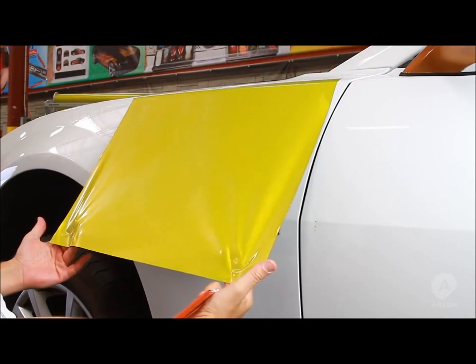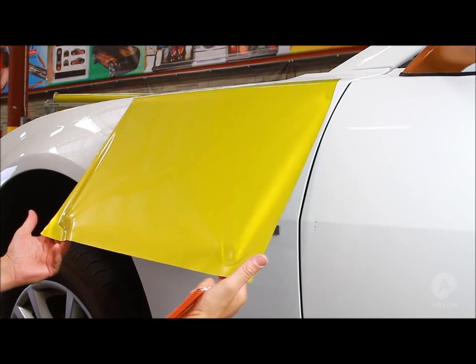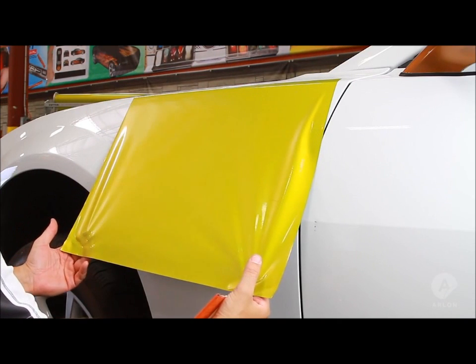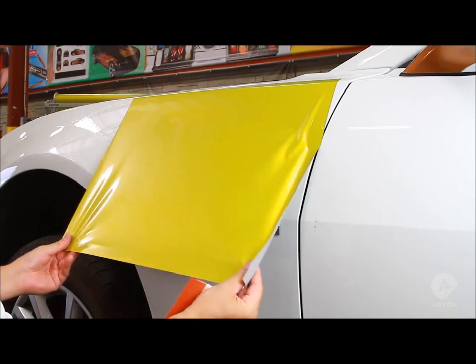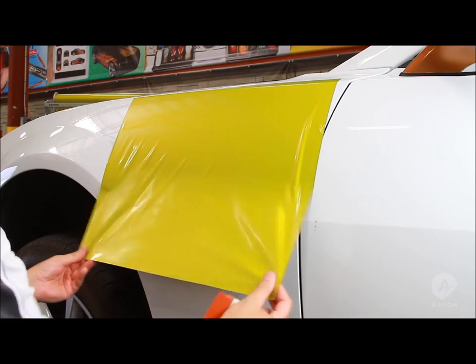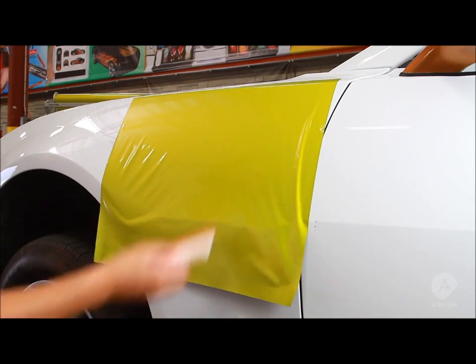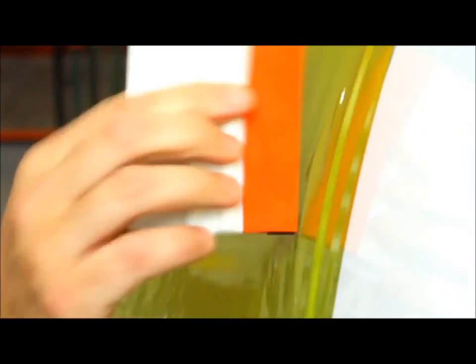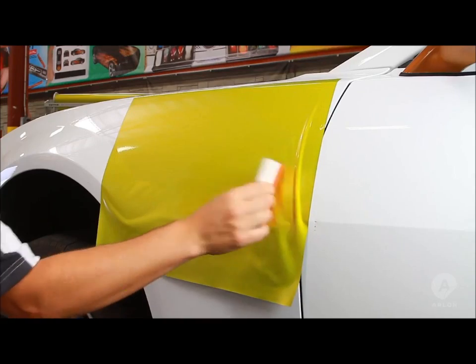As we install vinyl, all of us get the odd bubble and wrinkle, but here are some techniques to make your bubbles and wrinkles go away. First, let's talk about how not to get bubbles and wrinkles in the first place. To start, I'm holding the vinyl loosely in my hands, letting it find the curve of the vehicle. With firm pressure and the correct angle on your squeegee, you can easily install the vinyl all the way to the bottom of the panel.